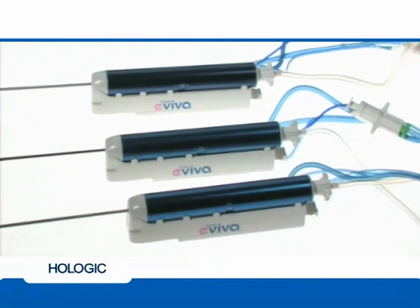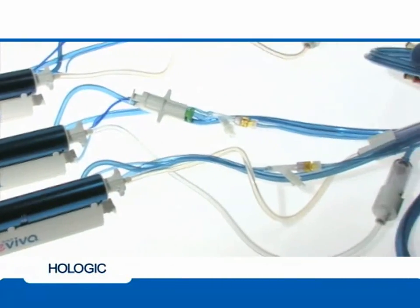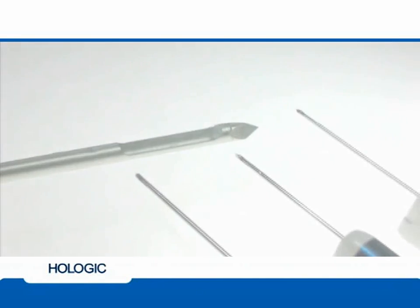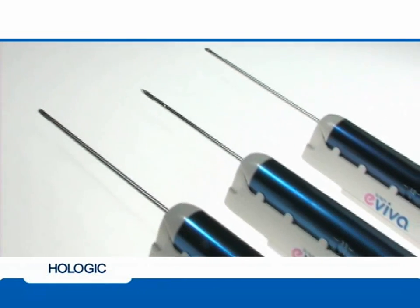Diverse needle options are available to address all of your patient needs regardless of lesion location or breast tissue. The Aviva family of products offers 9 and 12 gauge biopsy device options for stereotactic breast biopsy as well as petite options allowing treatment of a broad patient spectrum.